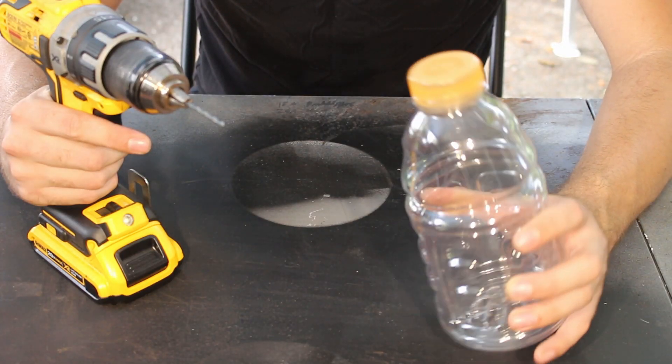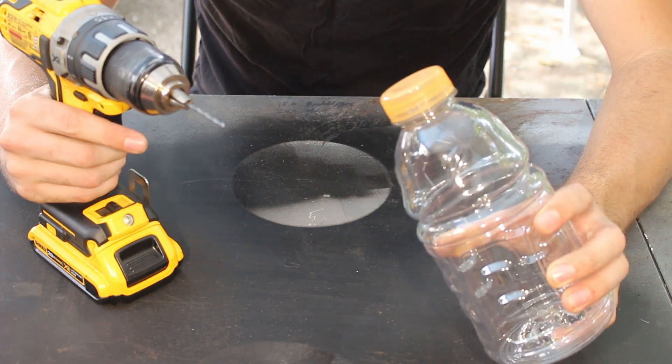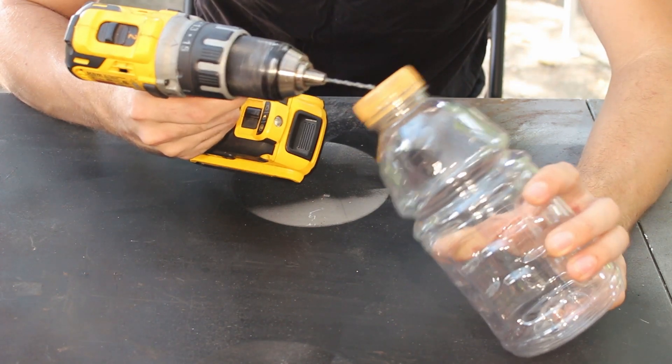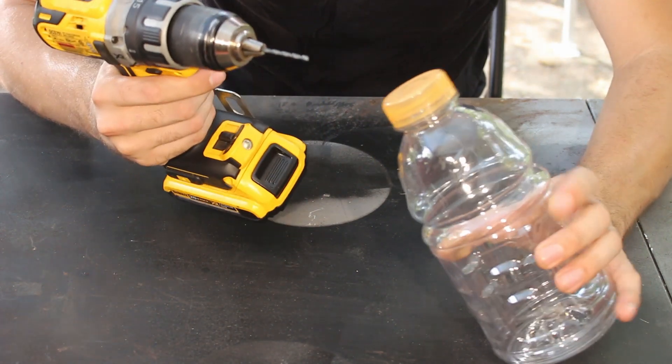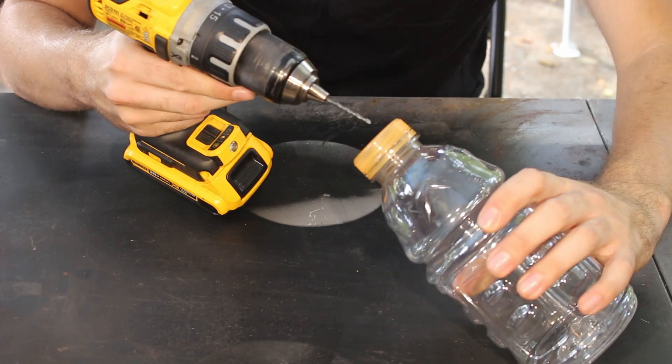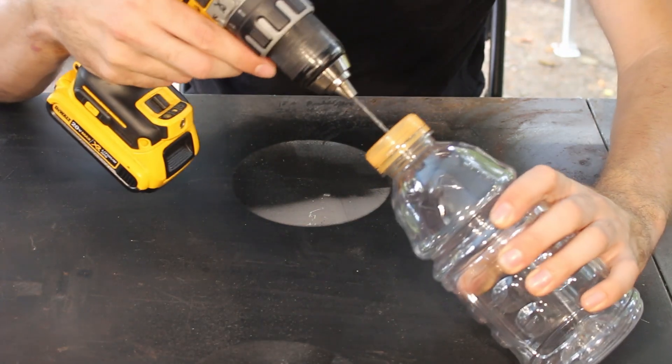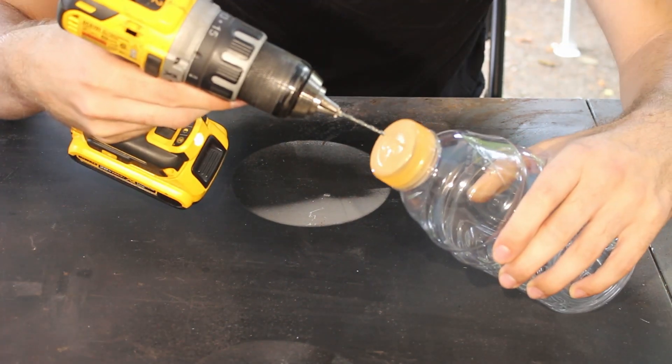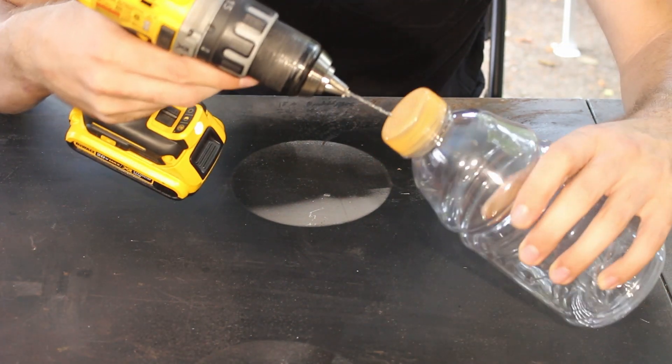The first step is to drill the holes in the lid of the bottle. I'm going to use the same small bit to make a pilot hole for the main hole and also to do the air hole. So I'm going to drill a hole in the very center of the cap, and then one more towards the side to let the air out.